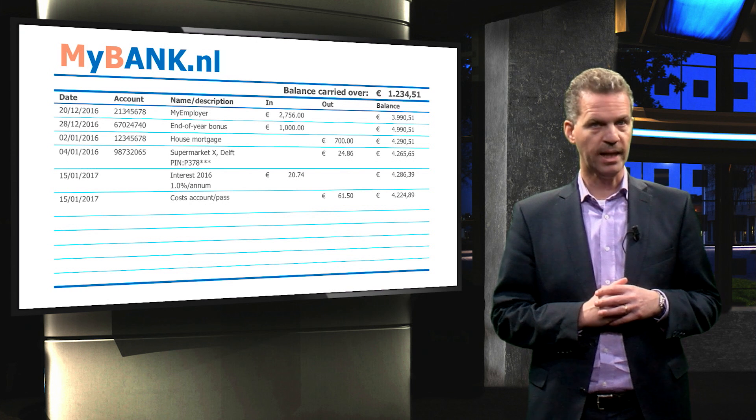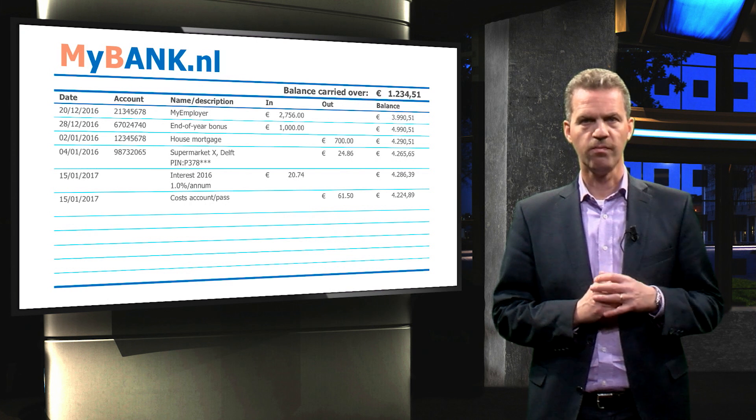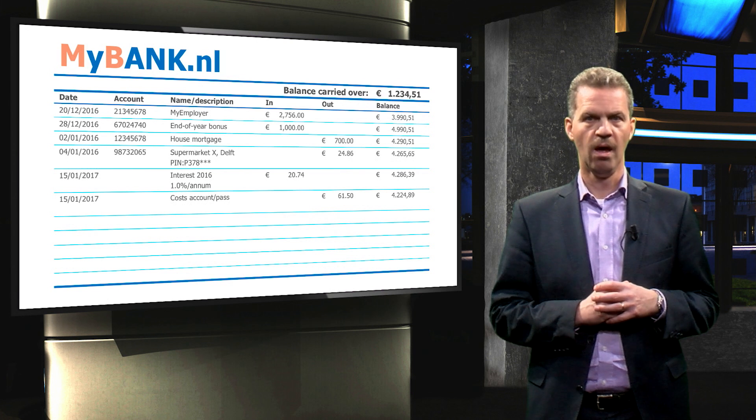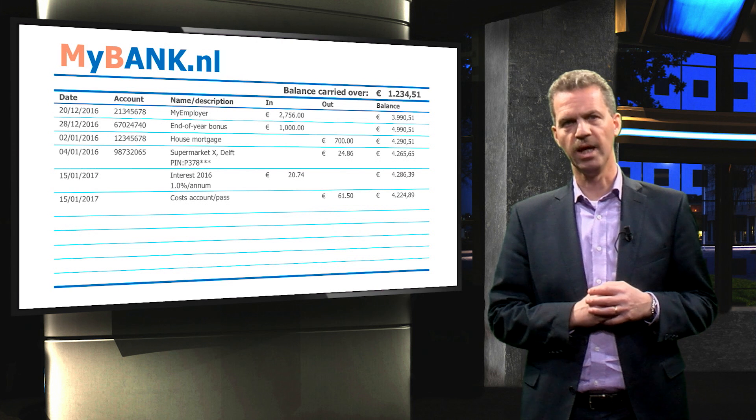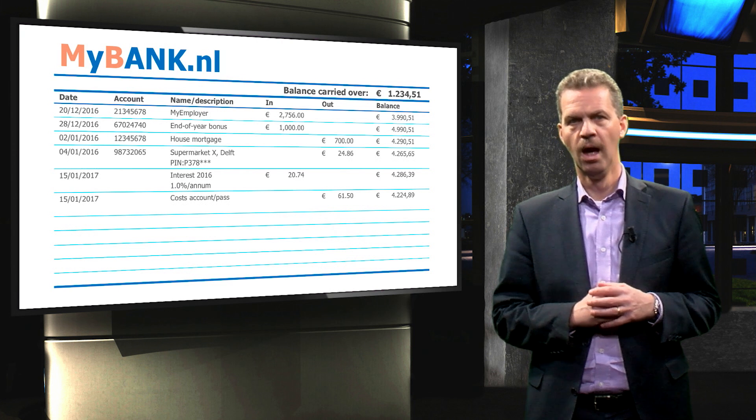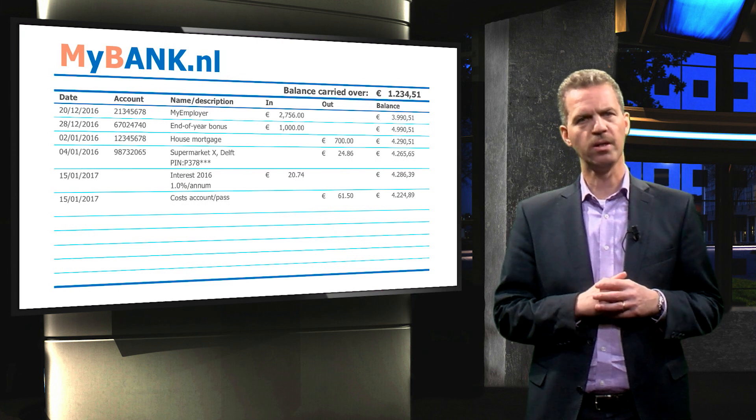And finally, the bank charges cost for using the bank account. The fact that you have a bank account costs money, and this resembles recombination in the volume element. Now, let's turn to the ambipolar transport equation.